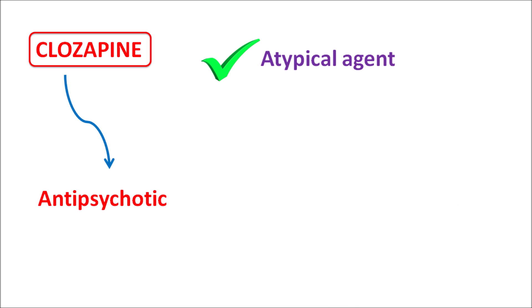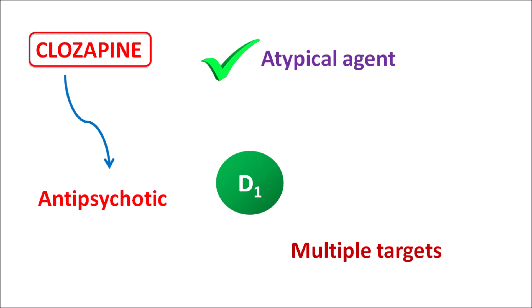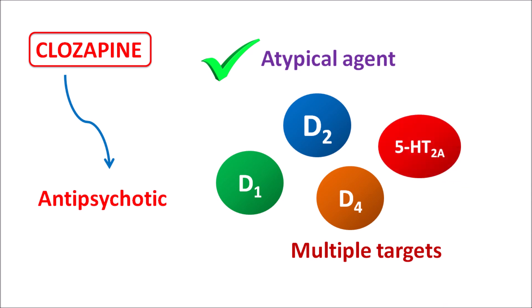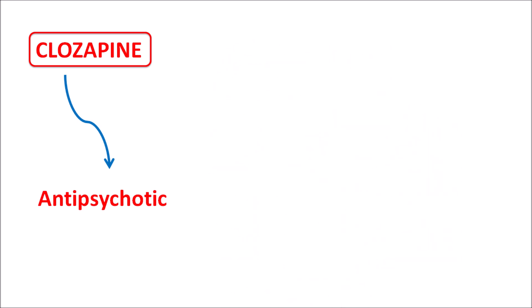Clozapine acts as an atypical agent and can act on multiple targets. It can bind to dopamine D1 receptors, D2 receptors, and D4 receptors. Apart from dopamine receptors, clozapine can also block 5HT2A receptors. By all of these actions, it can produce an efficient antipsychotic action.